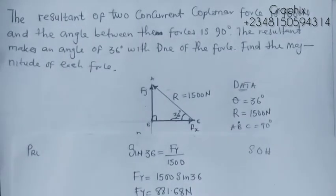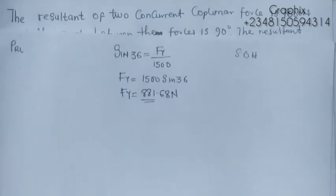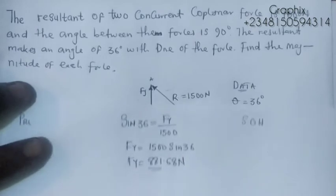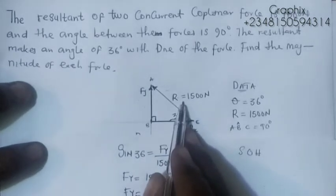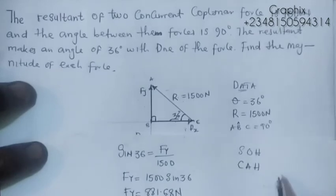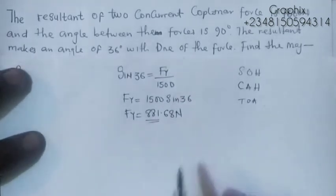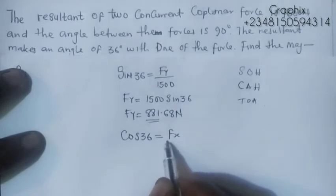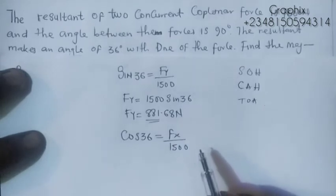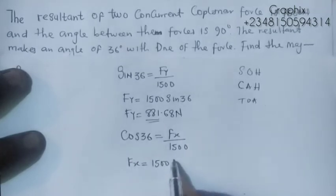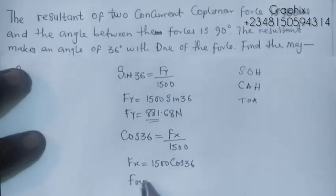For the magnitude of Fx, we use Fx and the resultant force. Fx is the adjacent side, R is the hypotenuse, so we use cosine — that's the CAH part of SOH-CAH-TOA. So: cos(36°) = Fx / 1500, which gives Fx = 1500 × cos(36°).